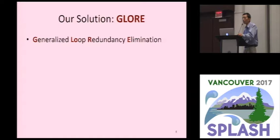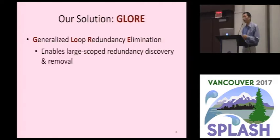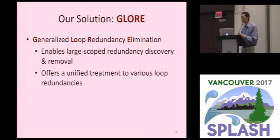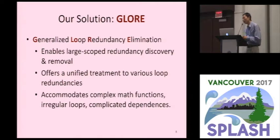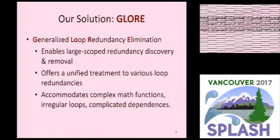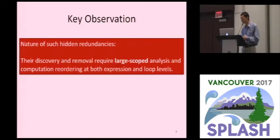The question is how can we make compilers be able to detect and remove such large scope redundant computations across loops? Our solution is GLORY. GLORY stands for generalized loop redundancy elimination. It has three important features. One, it enables large scope redundancy discovery and removal. Second, it offers a unified treatment to various loop redundancies. And third, it accommodates complex math functions, irregular loops, and complicated loop carry dependencies.